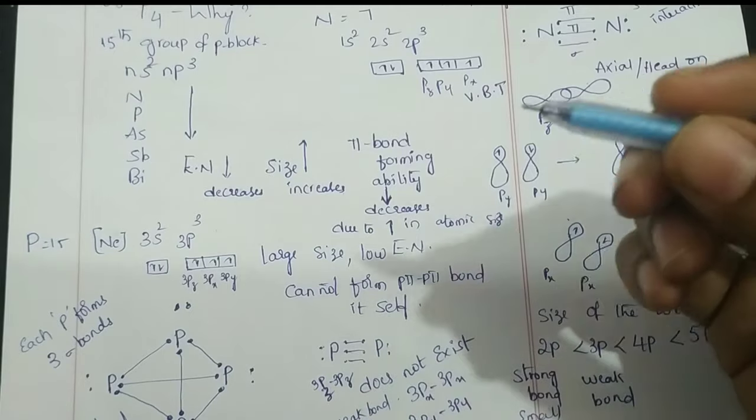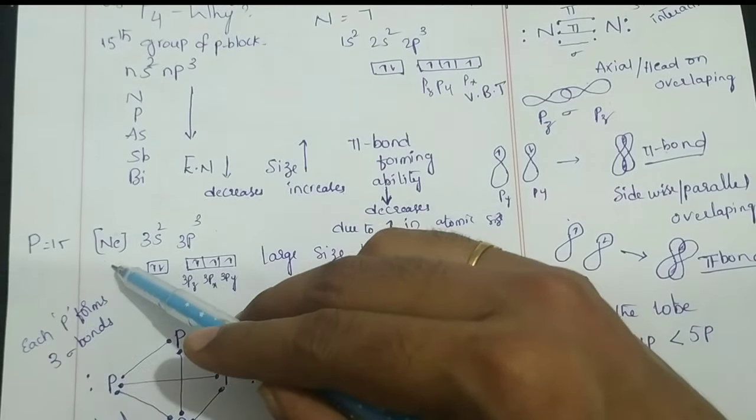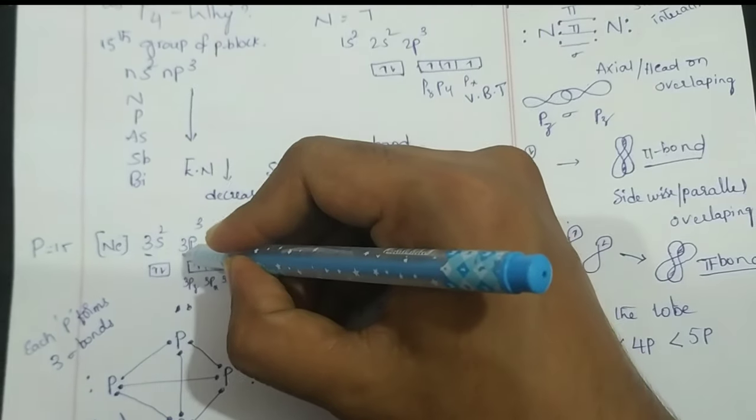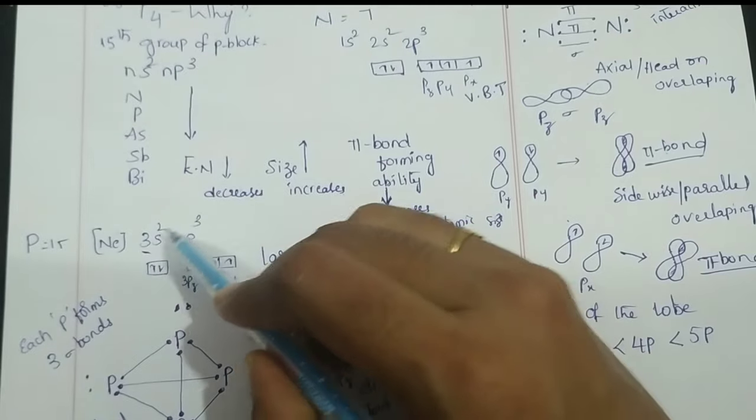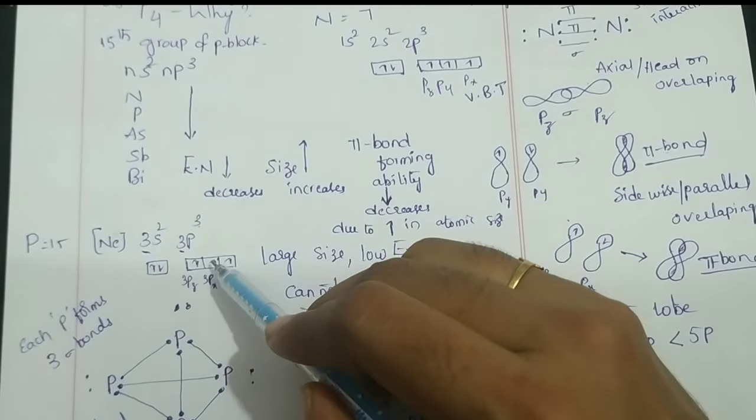Phosphorus atomic number is 15. Its electronic configuration is [Ne] 3s² 3p³. The outermost shell is the third shell, so it has 5 electrons in the valence shell.